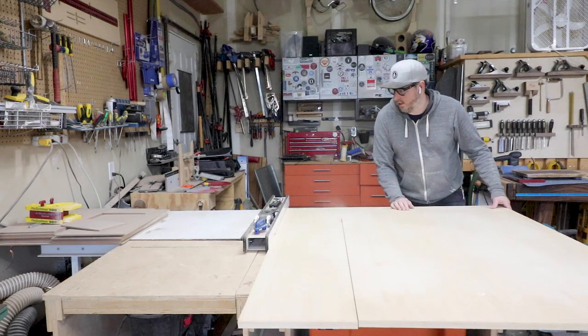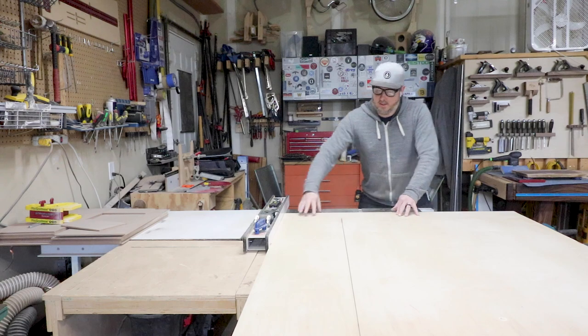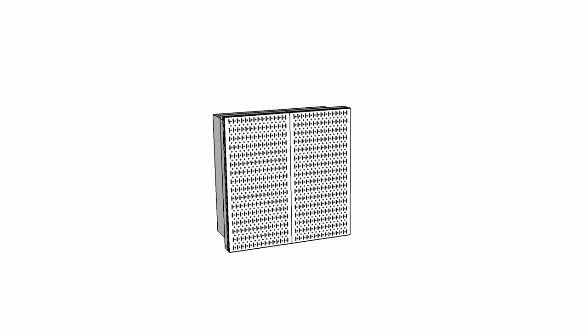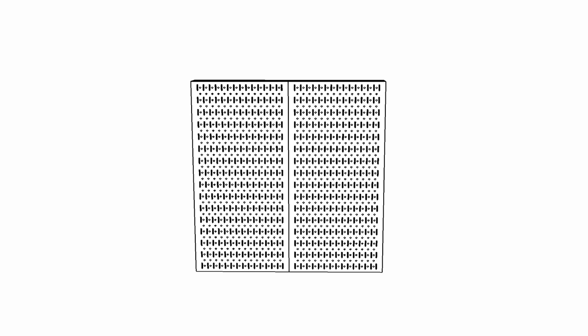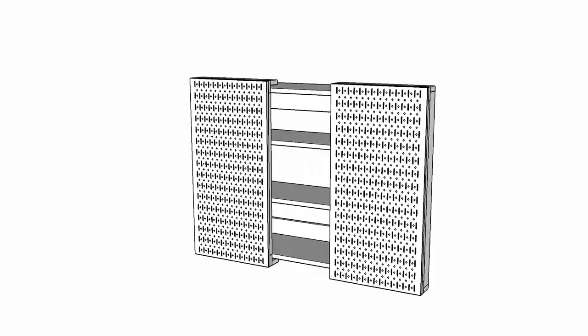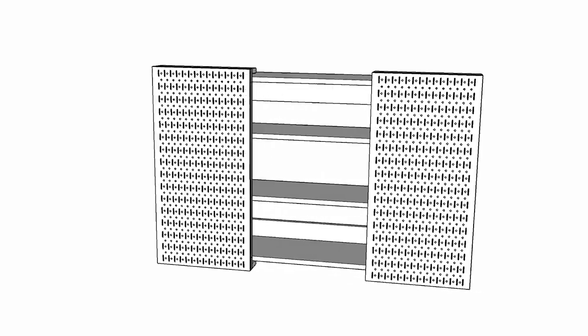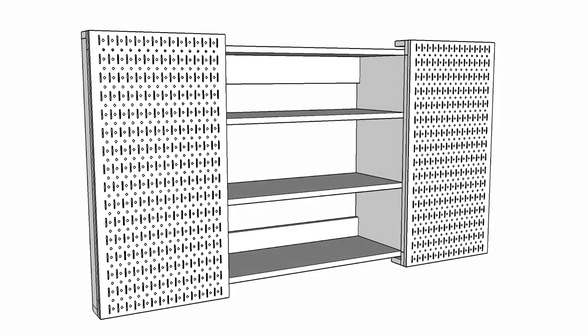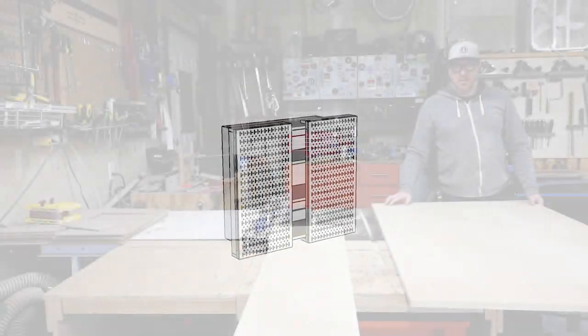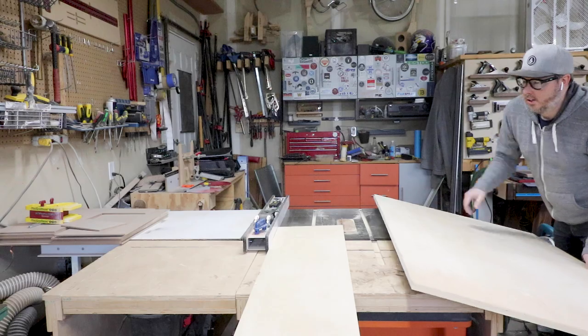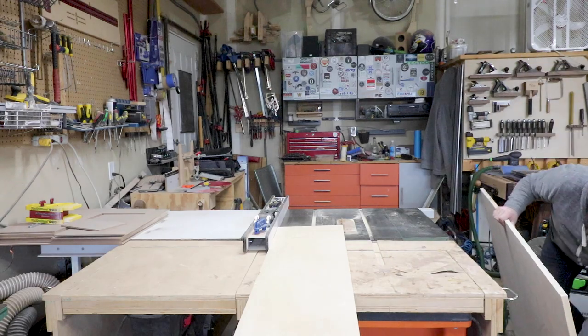All you've seen me do so far is break down plywood, so let's jump to an animation so I can explain the design a little better. I wanted to incorporate sliding panel doors and I thought wall control panels would be the best way to do this. This would give me tool storage on the outside of the cabinet but still space on the inside to store the small power tools I wanted to.